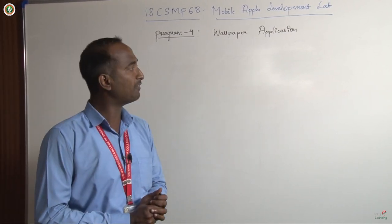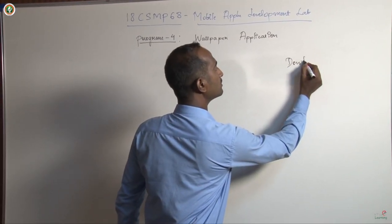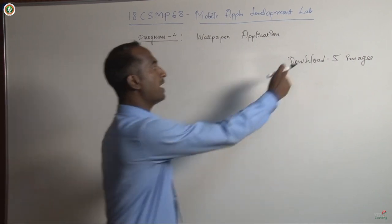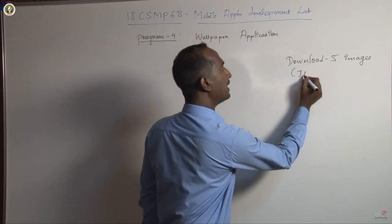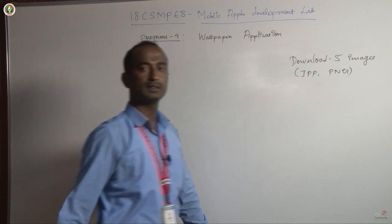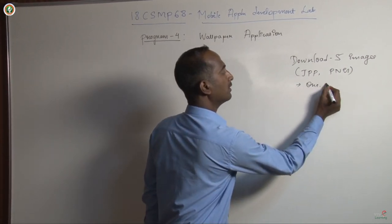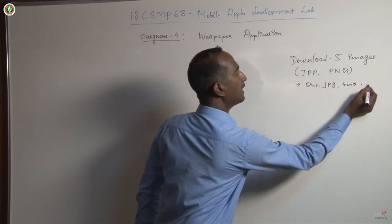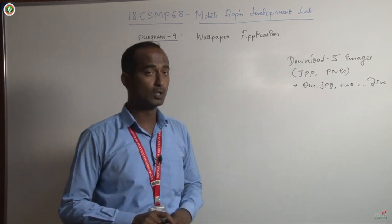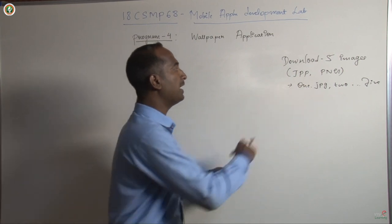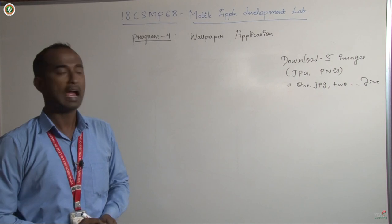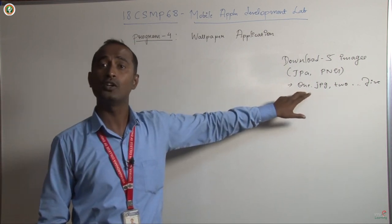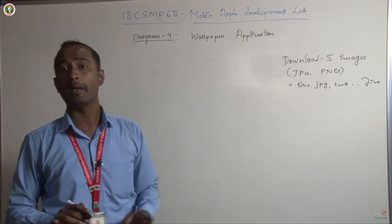Coming to the design requirement: first, you have to download 5 images in JPG or PNG format and name them as 1, 2, 3, 4, 5 in lowercase letters. Save those images inside the drawable folder. That is the prerequisite required for this wallpaper change application.